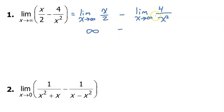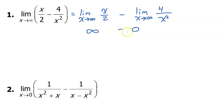Meanwhile, for the second term, the denominator is approaching infinity — getting bigger and bigger — which means the overall value of that fraction is getting smaller and smaller. This is approaching zero. So in the end, we have a ginormous number minus zero, which means this is approaching infinity.